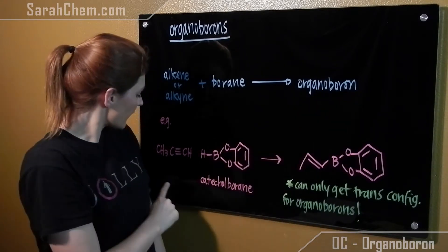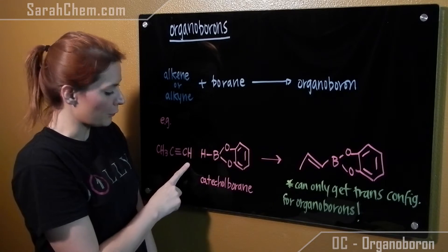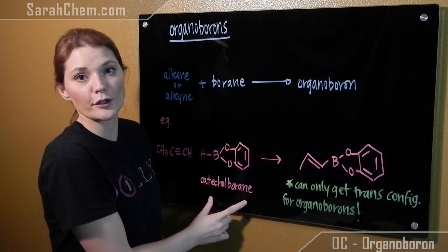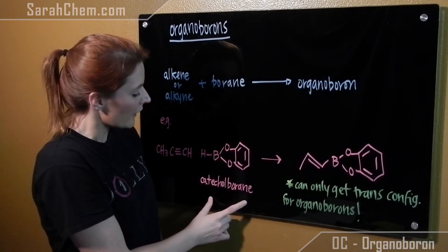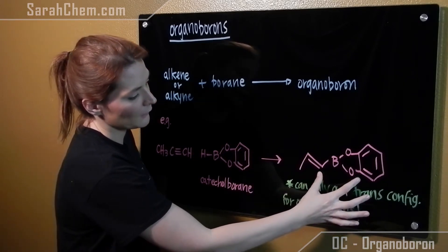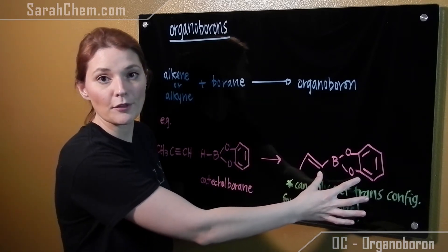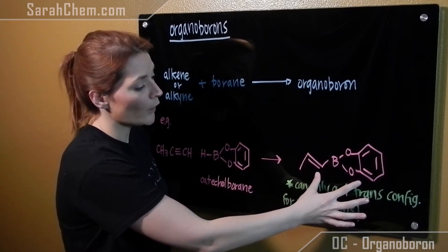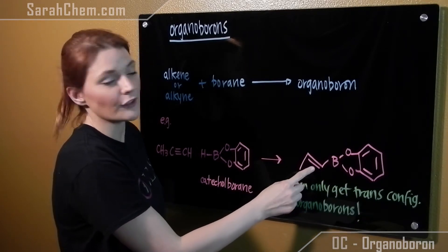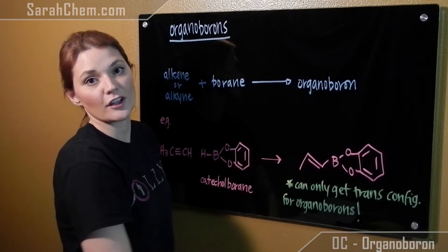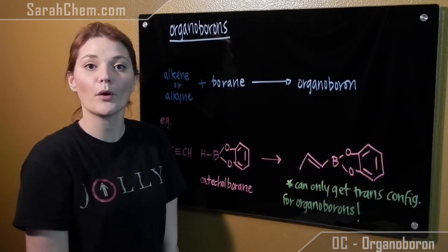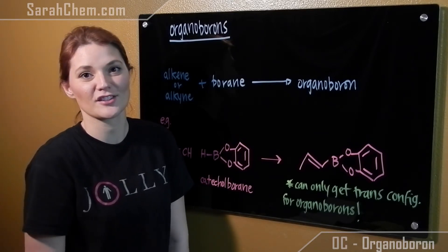An example is we can take this alkyne group and react it with this borane. This is a common borane that you'll see used and it goes through hydroboration where you get this product out. An important fact to remember is that when you have an organoborane it will always have a trans configuration, never a cis configuration. That's going to be important when you react it in the Suzuki reaction.